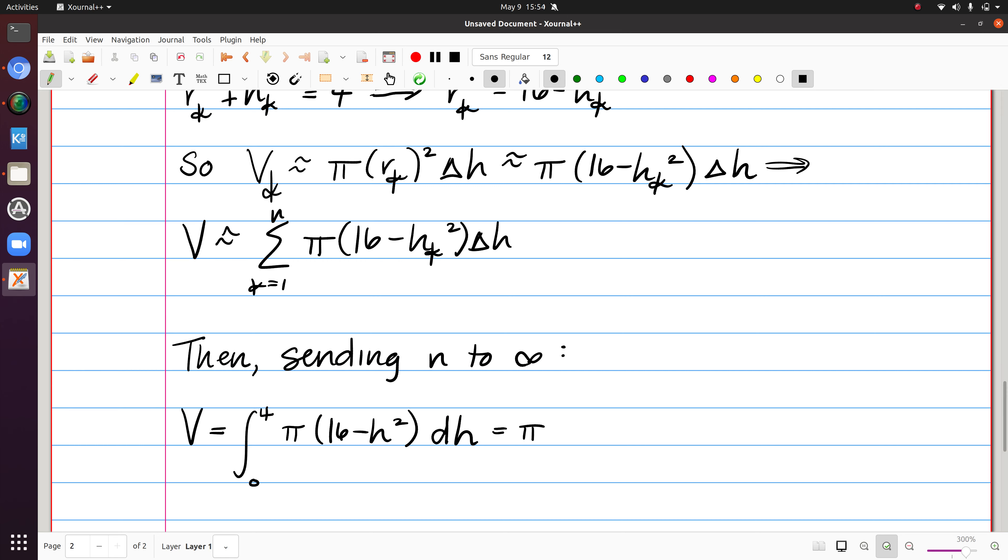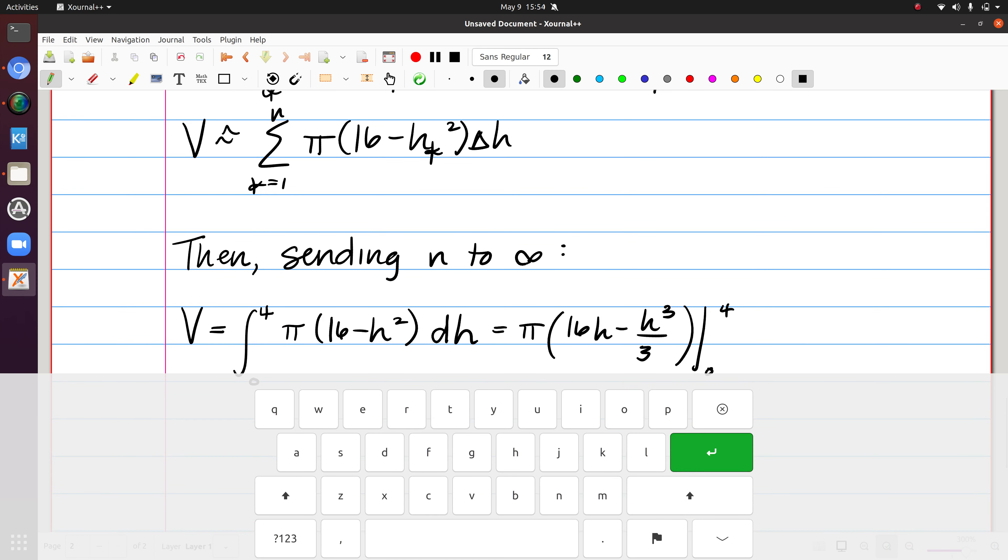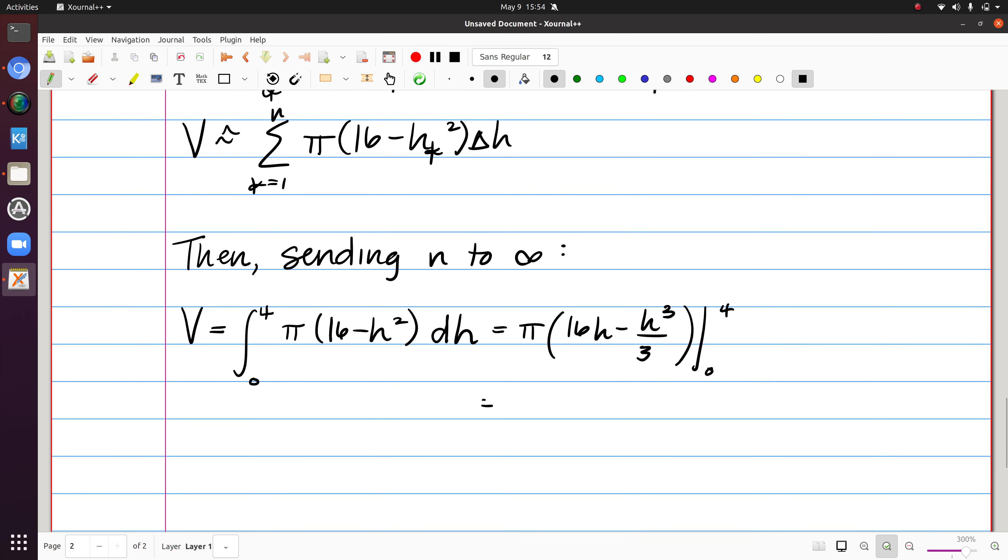If I anti-differentiate, I'm going to get 16h minus h cubed over three, all times pi, and we're going to let h range from zero to four. If we plug in four, we're going to get 16 times four, which is 64 minus 64 over three. It's all times pi, and so we end up with 128 pi over three is our final answer.